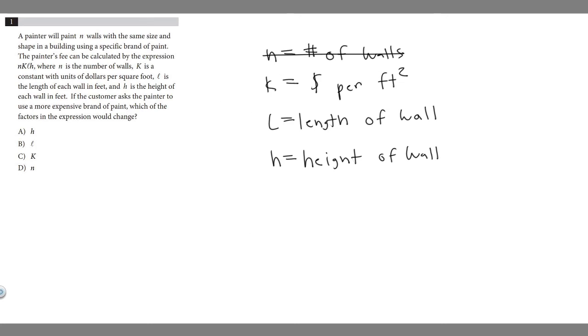This variable would change if we got a more expensive brand of paint. So k seems like it would work, but let's look at the last two. l is the length of the wall.